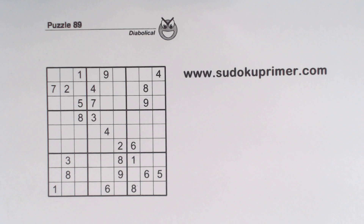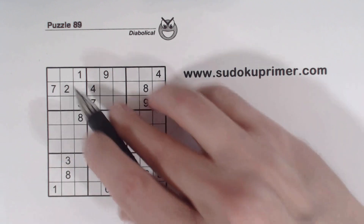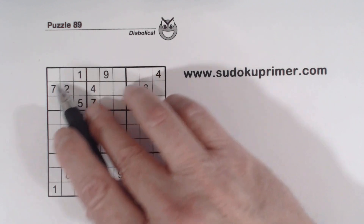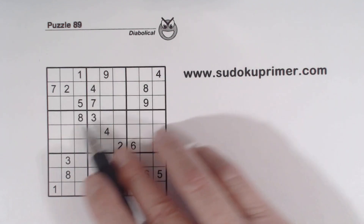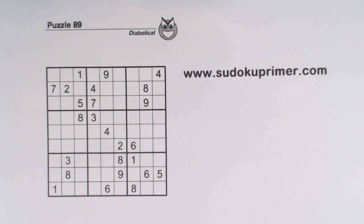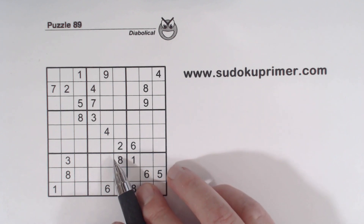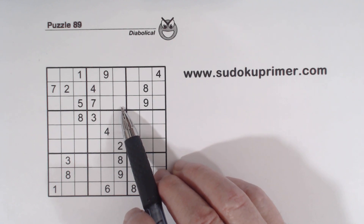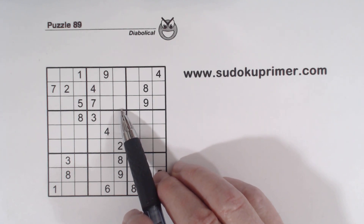Before we start, let's talk about containers. There are three types of containers: rows, columns, and boxes. There are nine of each — nine rows, nine columns, and nine boxes. Many people call containers 'houses' in Sudoku, but I call them containers; they're the same thing. Each container type has exactly nine cells and can hold nine numbers, with only one of each number.